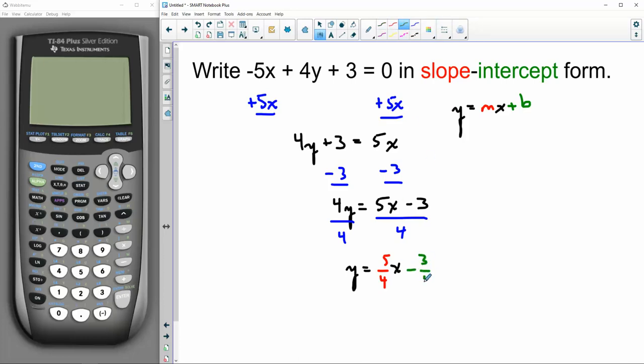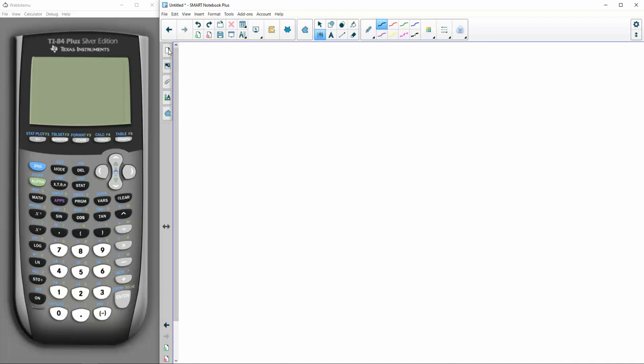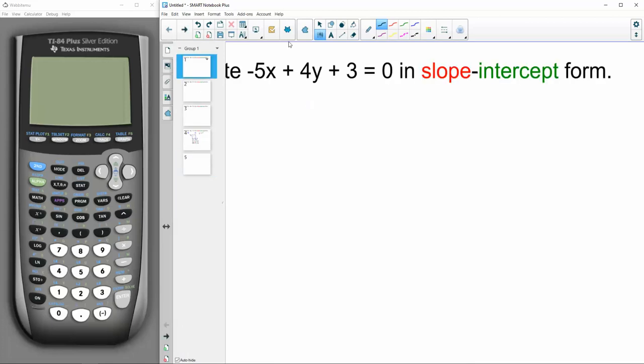There, did it. That's probably the most efficient way to do it as you get fast at this stuff. But let's do it a different way. 5/4 for the slope and negative 3/4 for the y-intercept. Let's do it another way.